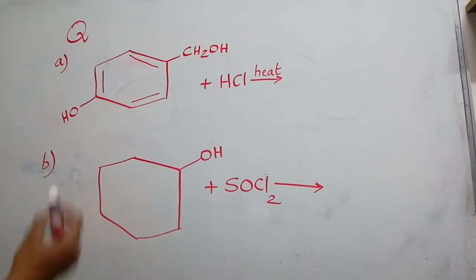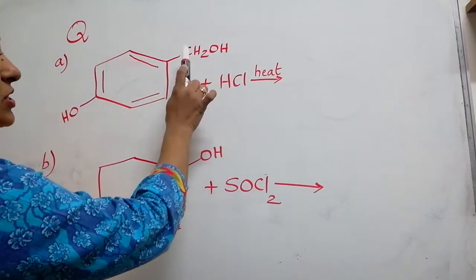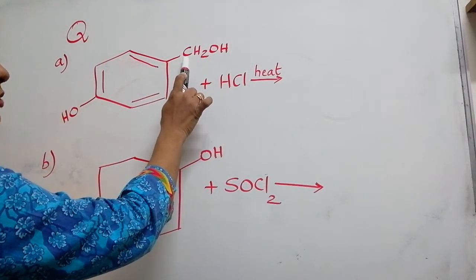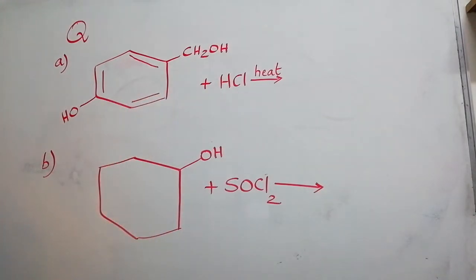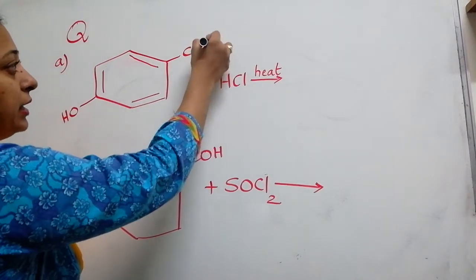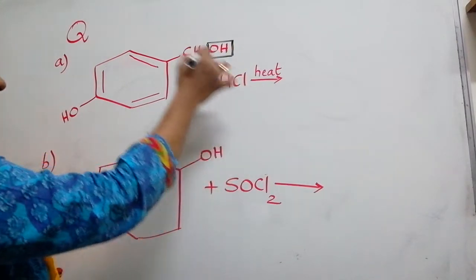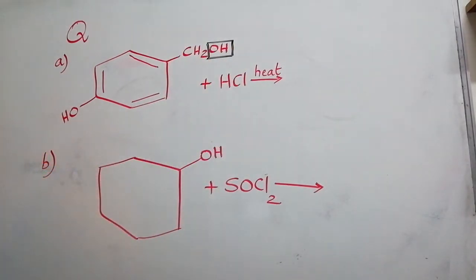But the question is whether the OH directly attached to the benzene ring or the OH which is attached to the CH2 and not directly attached to the benzene ring. The answer for this is the OH which is not directly attached to the benzene ring is getting replaced. Everyone can think why it is like that.